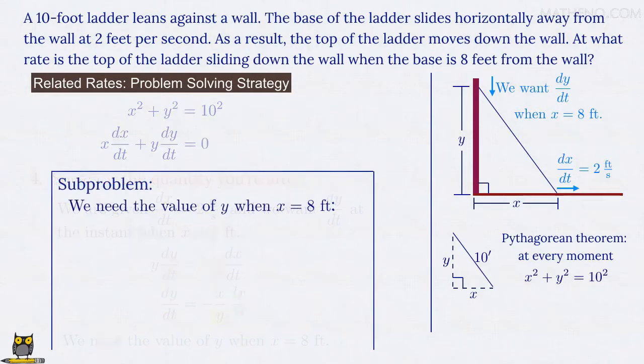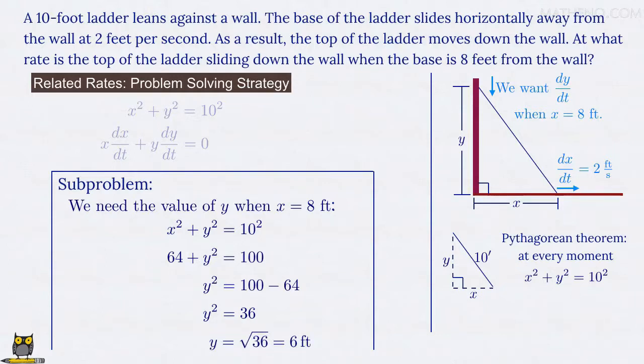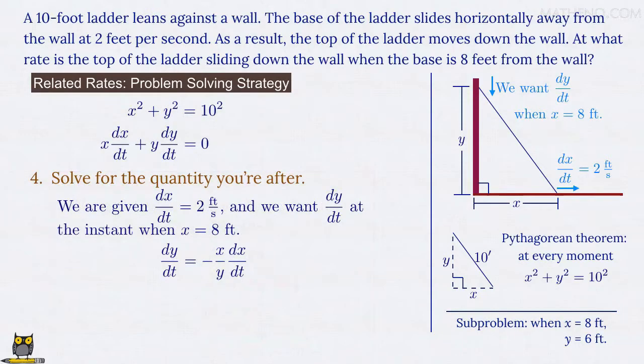Remember that the Pythagorean theorem holds at every moment as the situation progresses, so at every moment, x squared plus y squared equals 10 squared is true. So when x equals 8 feet, we have 8 squared plus y squared equals 100, or since 8 squared is 64, 64 plus y squared equals 100. That means y squared equals 100 minus 64, which is 36, and so y equals the square root of 36, which is 6. And so y equals 6 feet when x equals 8 feet. And that completes our little subproblem, so let's put the result over here on the right, and we can return to our main problem, and finally find the value for dy/dt by substituting in the various values.